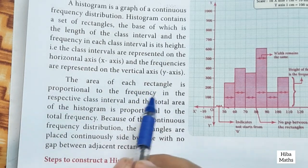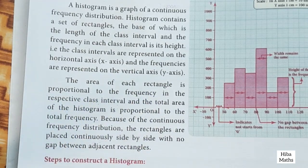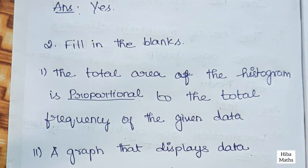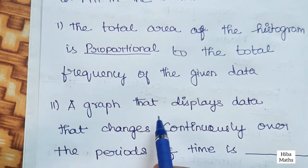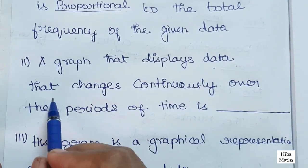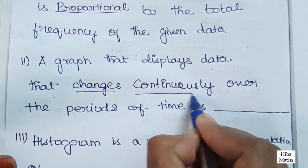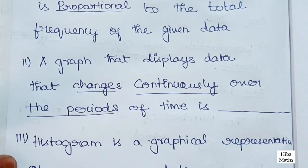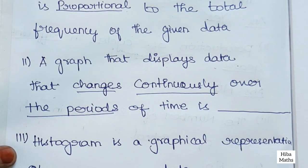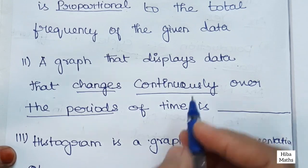The area of each rectangle is proportional to the frequency. The histogram is a graph of continuous frequency distribution, and the total area will be proportional to the total frequency.